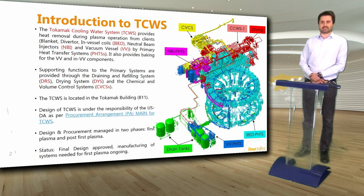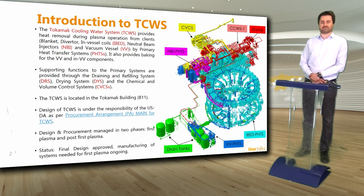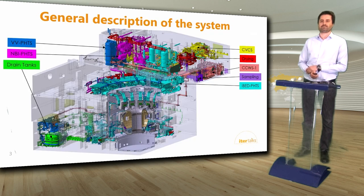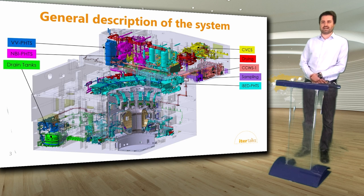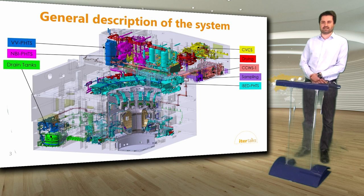In addition to these three main systems we have auxiliary or supporting subsystems: the chemical and volume control systems, which control water chemistry and water volumes of the main subsystems; the drying system, which dries out the in-vessel components and vacuum vessel prior to long-term maintenance; and the draining and refilling system, which drains the main systems prior to maintenance and refills them once maintenance is finished. The TOKAMAK cooling water system is completely located in the tokamak building and nuclear building of the ITER machine. Design and procurement is the responsibility of the United States domestic agency, managed in two main phases.